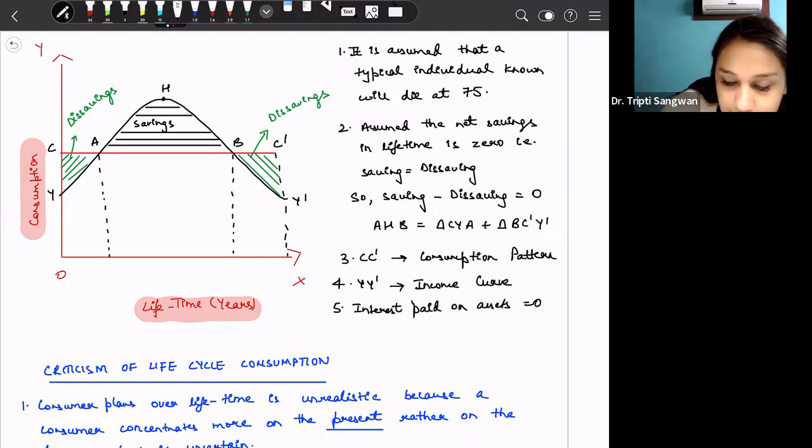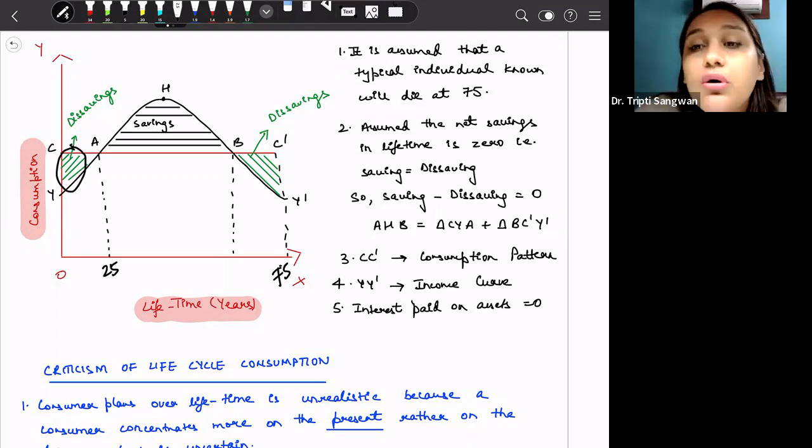Say this is 75 years of life expectancy. So while in his working years, as I have mentioned here, this is the dissavings that he does. That is, say up to 25 years, 0 years to 25 years, he is not working, so he is dissaving. He might be consuming from his parents' income or some other income source or maybe borrowing, whatever. But generally, if we have 75 years life expectancy, we have 25 years on our parents' income.